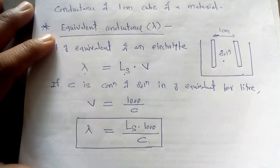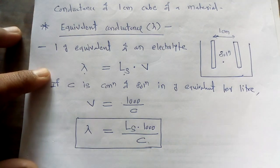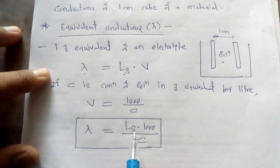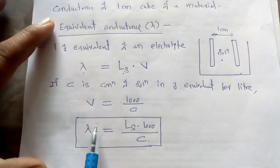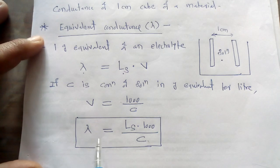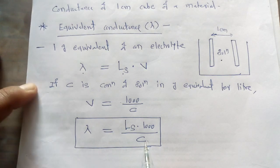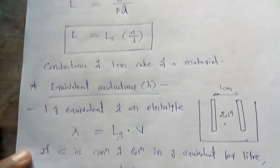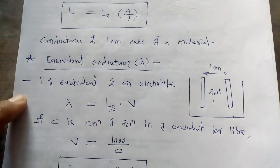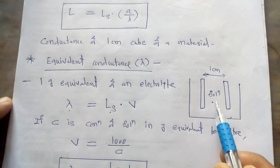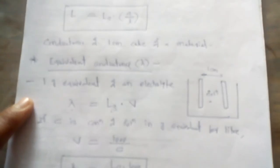This equivalent conductance can be calculated with the help of its specific conductance and concentration of a particular electrolytic solution. It cannot be calculated directly — there is no direct method for calculation of equivalent conductance. Instead, it must be calculated with the help of specific conductance as well as the concentration of the electrolytic solution. This is the third important concept from the chapter.